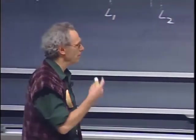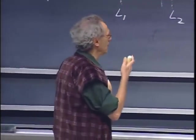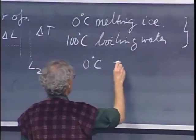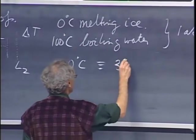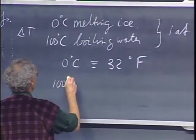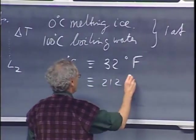And so the Fahrenheit scale, in that sense, is not very reproducible, and it has been redefined now in such a way that zero degrees centigrade is thirty-two degrees Fahrenheit, and hundred degrees centigrade is two-hundred-and-twelve degrees Fahrenheit.